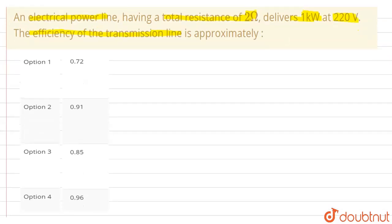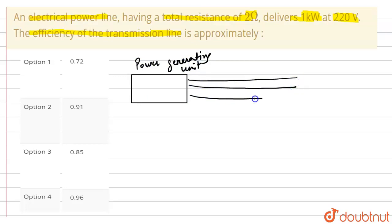Let's suppose that this is our power generating unit, and the power is transmitting through these transmission lines up to several kilometers. Here is the point where we are measuring it.